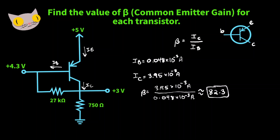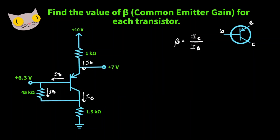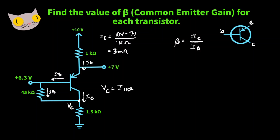Let's do the last one. For this one, we're going to need to determine the value of the emitter current. So we're going to need 10 volts minus 7 volts, and divide that by the 1000 ohm resistor, which gives us a value of 3 milliamps. We're also going to want to find the voltage at the collector pin — we'll call this point V_C. V_C is going to be equal to the current running through the 1k ohm resistor times the 1.5k ohm resistor.